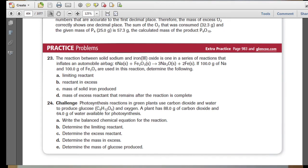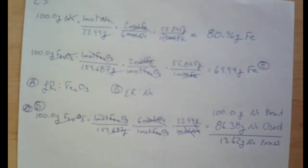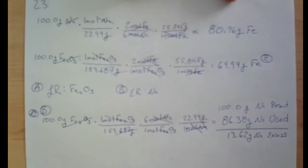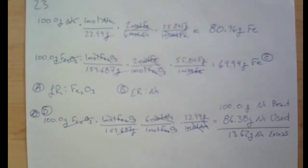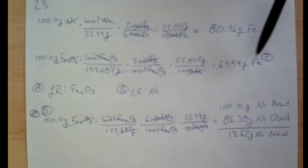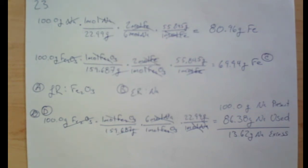Pause the video and try practice problem 23. The answers to problem 23: to find the limiting reactant, calculate the mass of iron produced for each reactant — whichever produces the least amount of iron is the limiting reactant. In this case, the limiting reactant was iron(III) oxide and the reactant in excess was sodium.